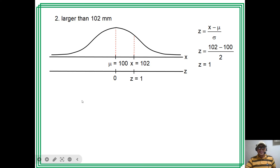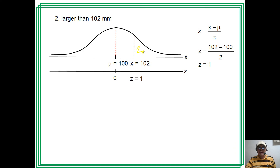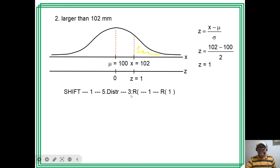To solve for the area to the right, press Shift 1, distribution, then press 3 (for R, meaning right-tail), then input 1. The result is the area to the right of z = 1, which is 0.15866. That is the answer to question 2.